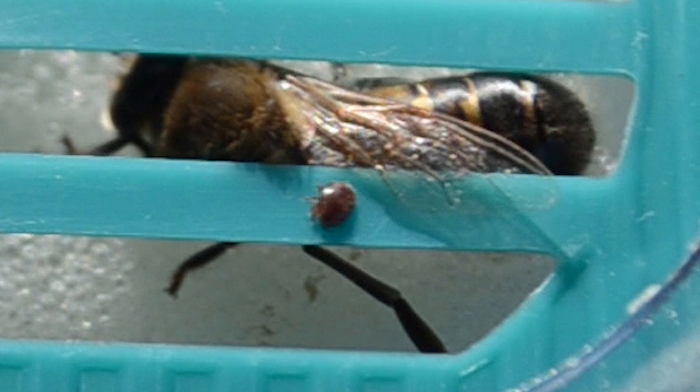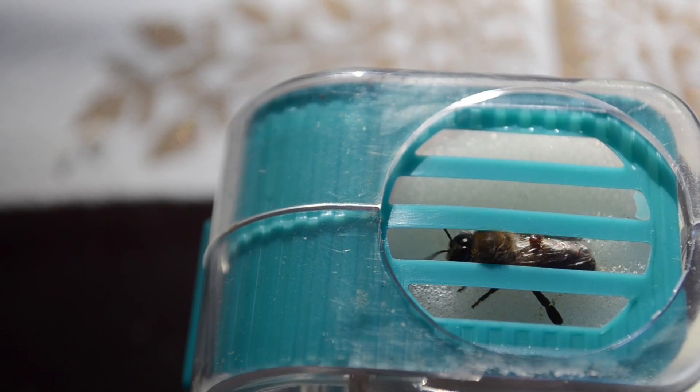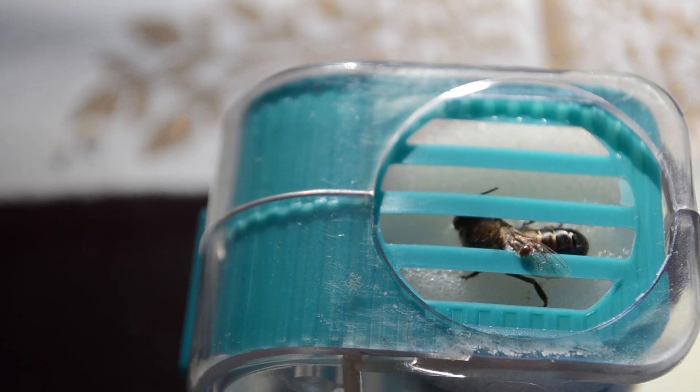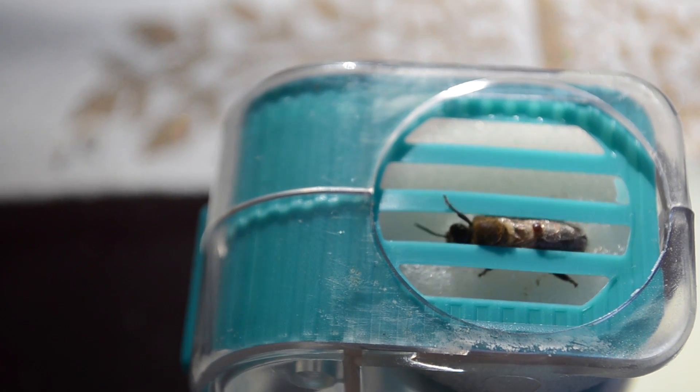Beekeepers have been working hard to battle against the varroa mite and have come up with many ways to fight against them. Some include chemicals that target a bug on another bug's back, while others are more natural methods.